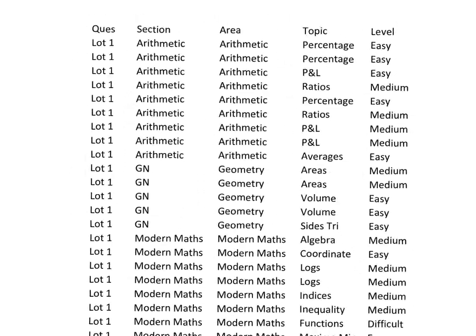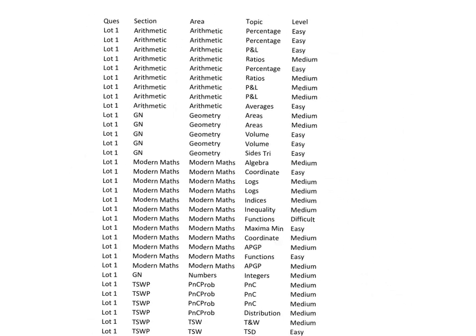Hi guys, in this video we are going to talk about the geometry and number section within the CAT exam. So I have divided CAT paper into 4 sections. This is last year's CAT paper: arithmetic, geometry numbers, modern maths, and time speed distance work.